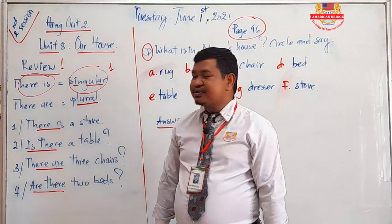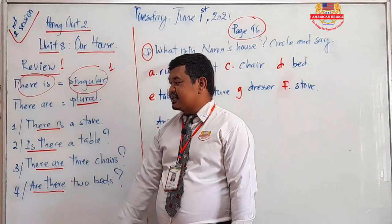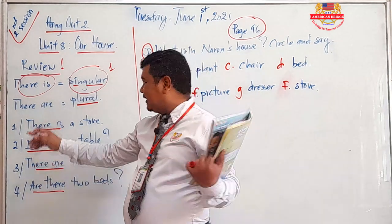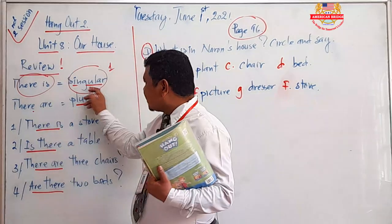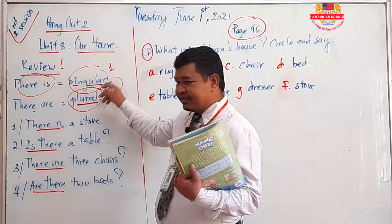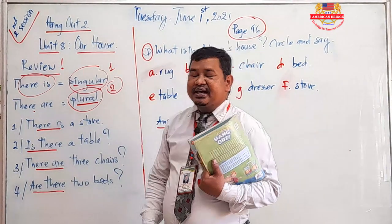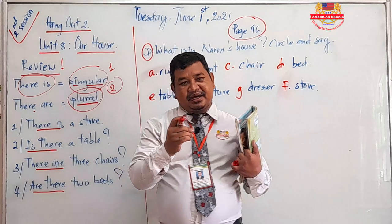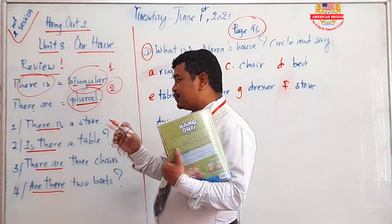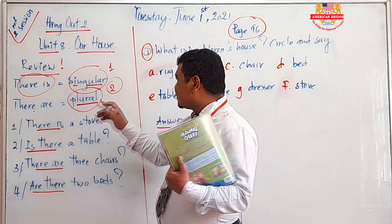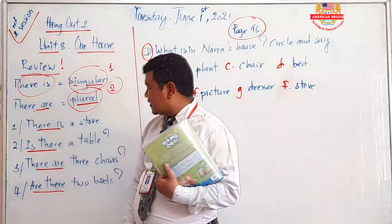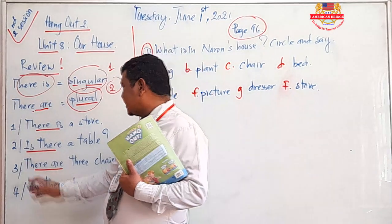If you want to make those plural — starting from two and up — you have to use 'there are.' For example: 'There are two chairs in my classroom,' 'There are two chairs in my bedroom,' 'There are four chairs in my kitchen.'